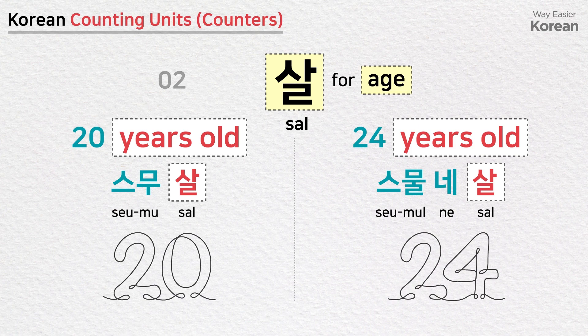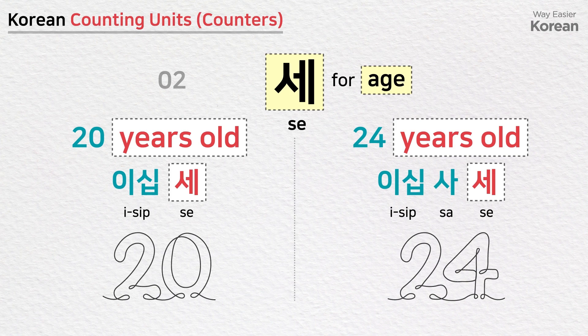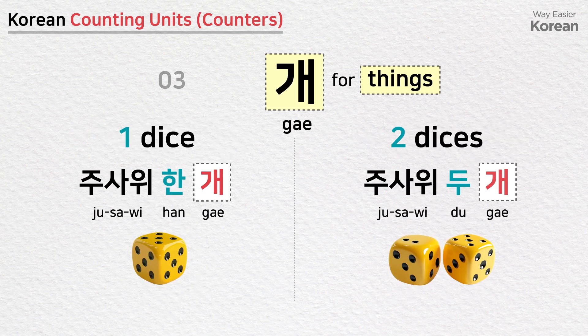살 is used for counting age: 20 years old — 스무 살; 24 years old — 스물네 살. We can also use Sino-Korean numbers like 이십 세, 이십사 세. 개 is used for counting things: one dice — 주사위 한 개; two dice — 주사위 두 개.